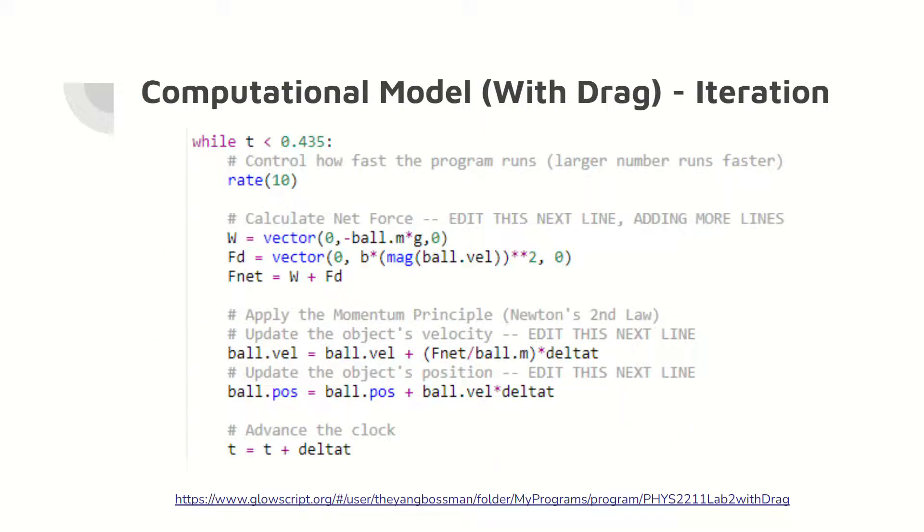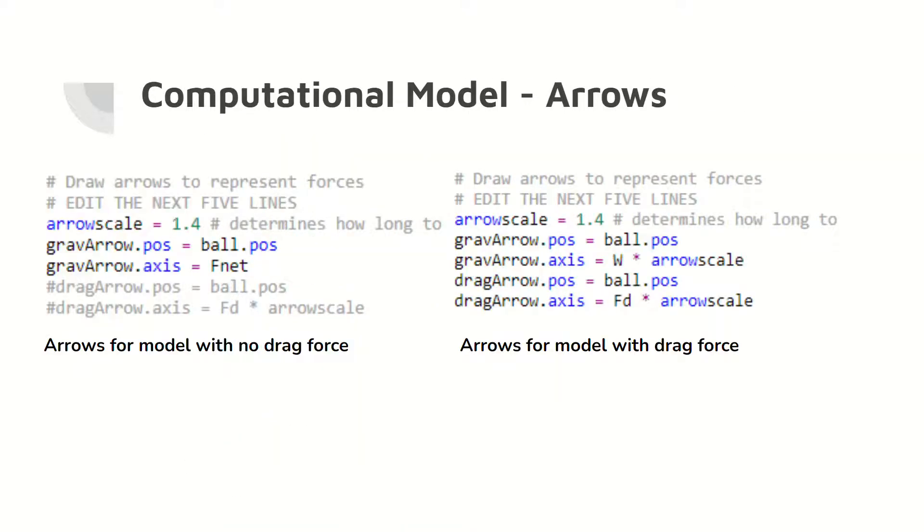Here is the iteration code for the model with the drag force. The iteration steps are the same as the model with no drag force. Here is the code to draw the arrows representing the force due to gravity and the drag force on the ball.